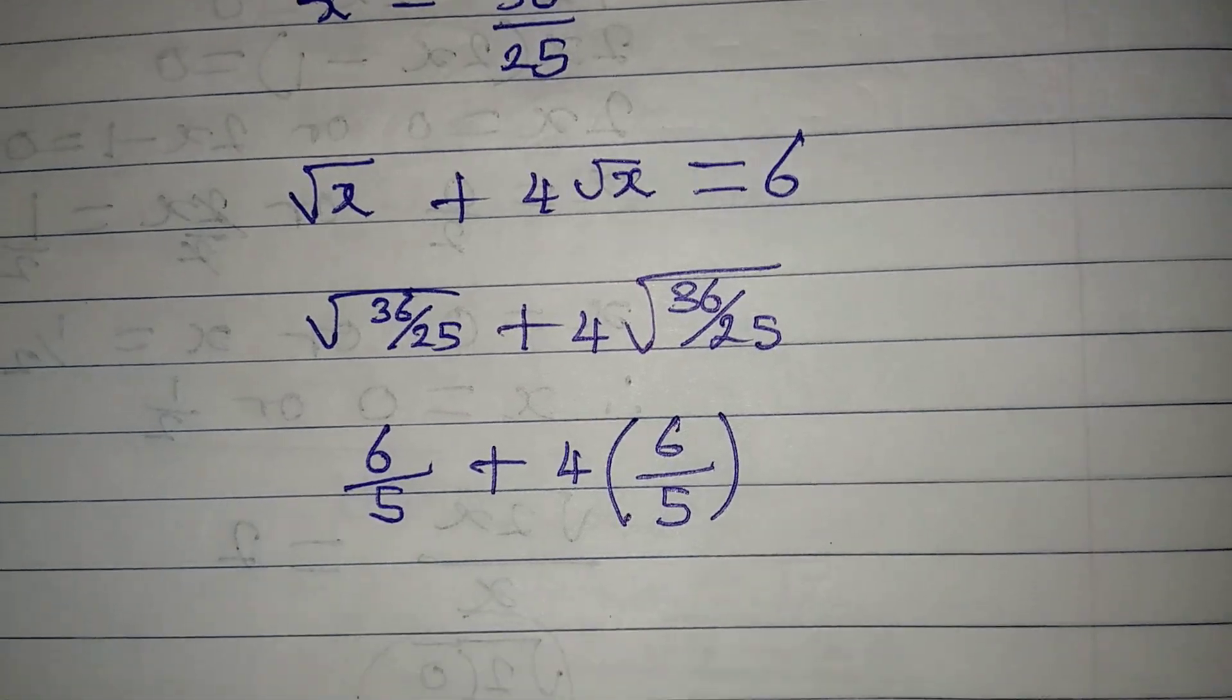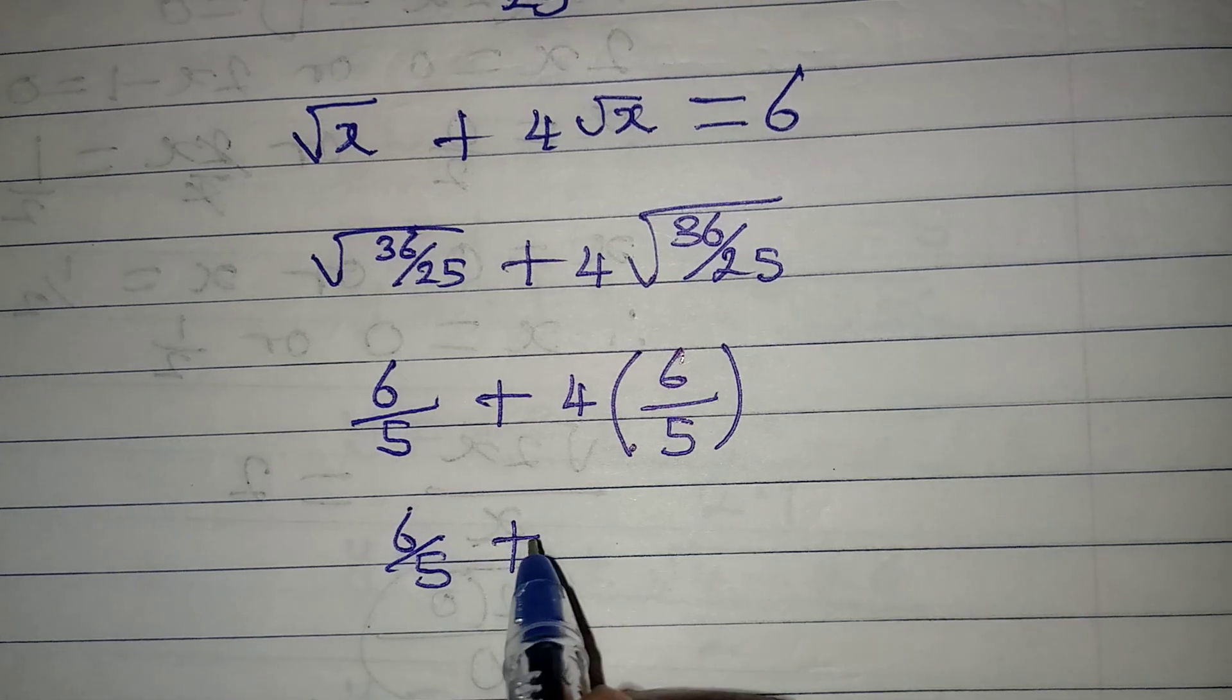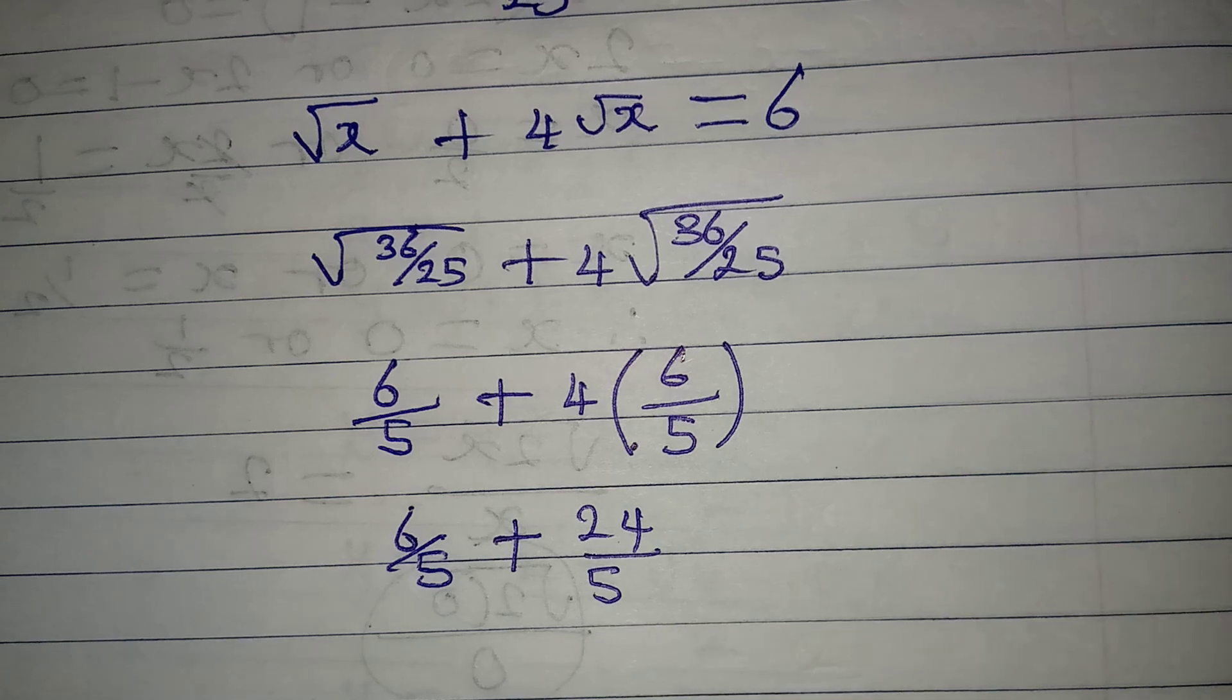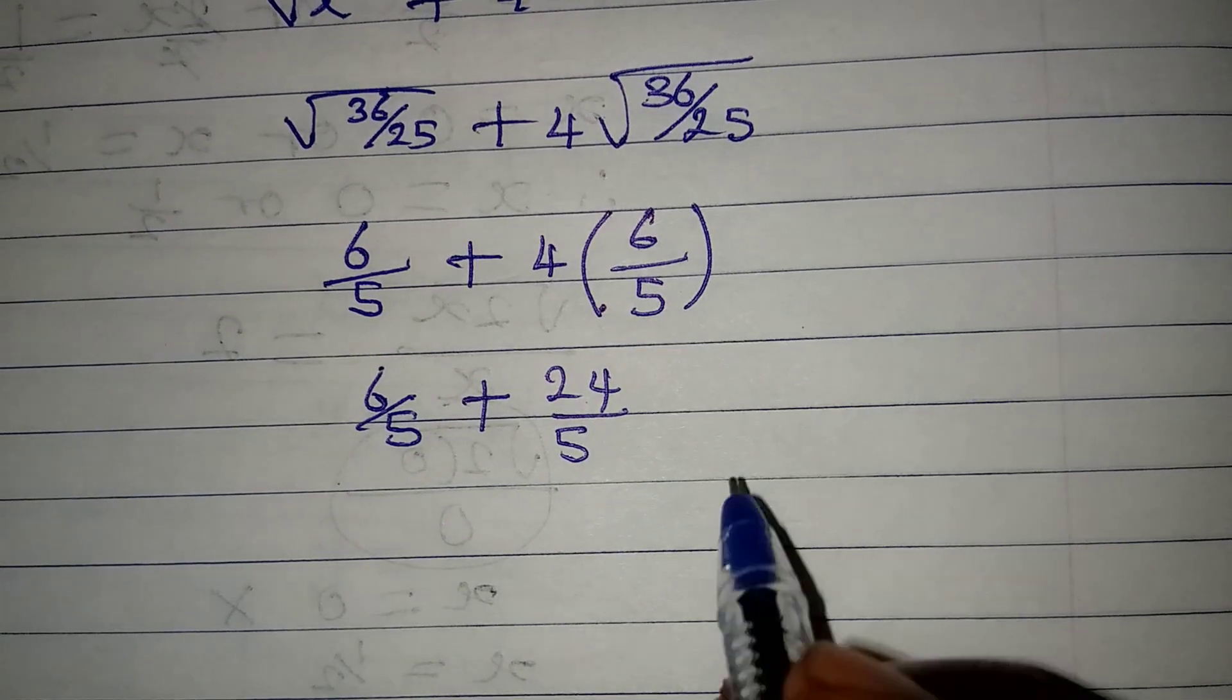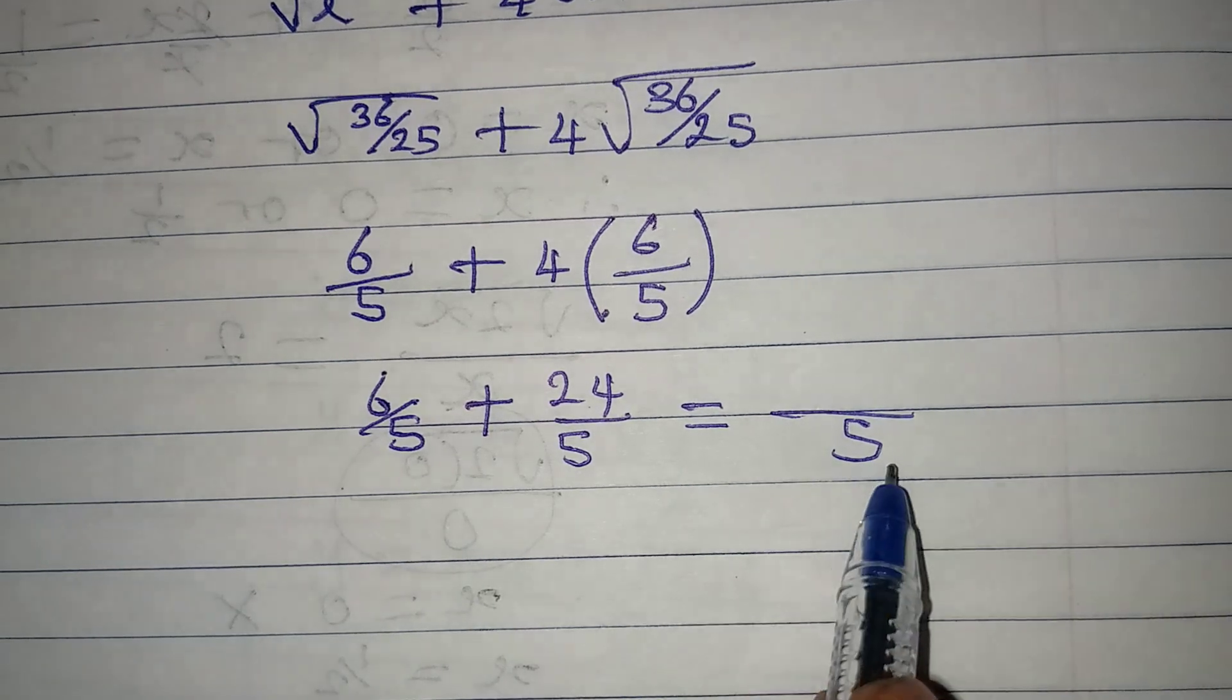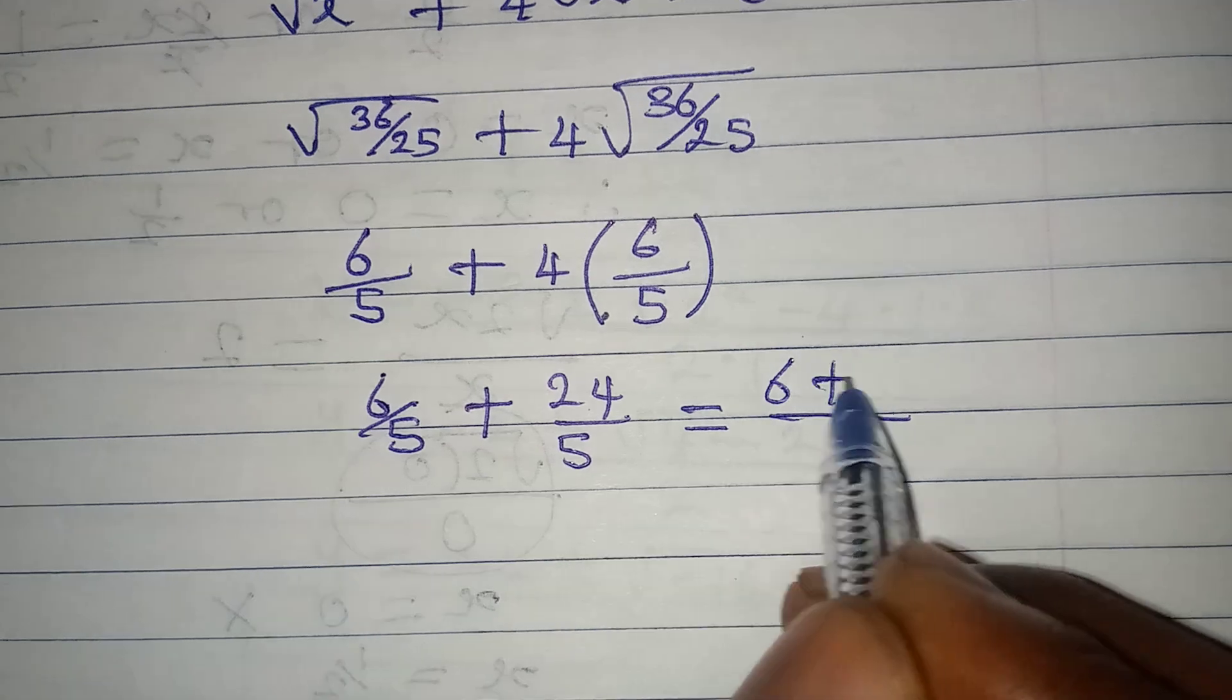This will give us six over five plus 24 over five. Now the next thing is to get the LCM. The LCM is five.